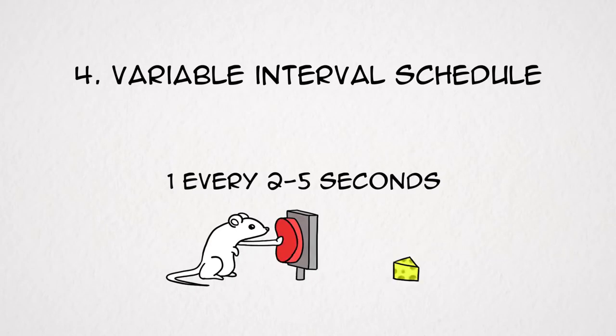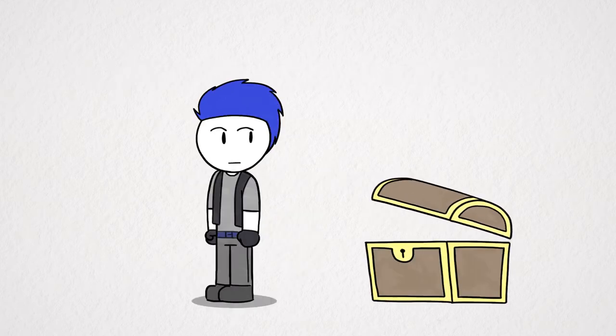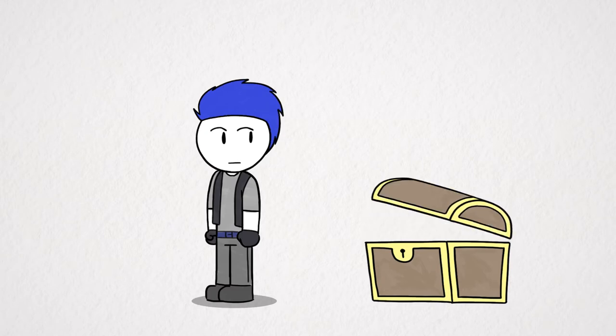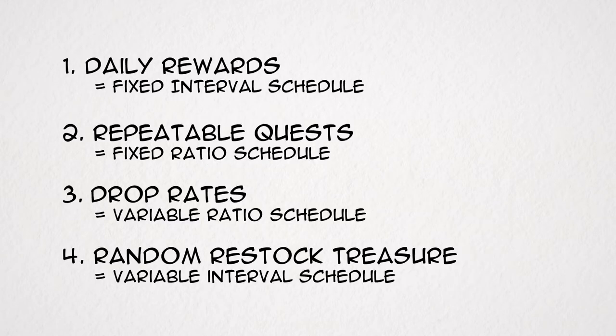And 4. Variable interval schedule. Wherein a reward is given when the button is pressed after a random amount of time has passed. And this comes in the form of treasure chests that fill over time. But you won't know when, so keep checking back. Nope, nothing yet. And if it's not clear yet, yup, these are being applied in game design.